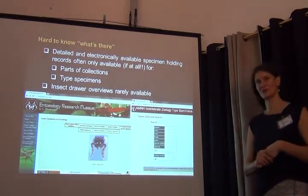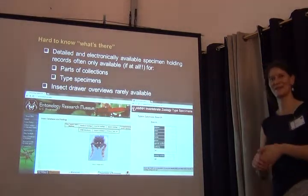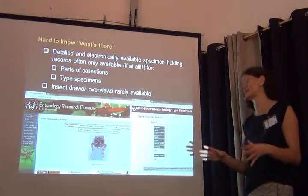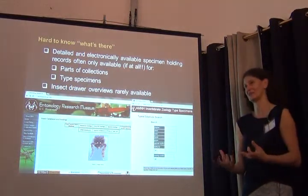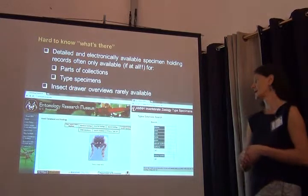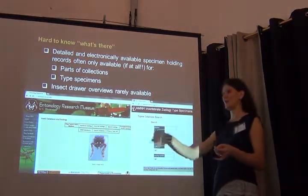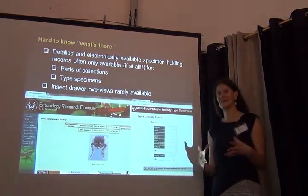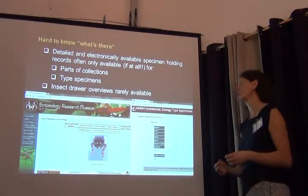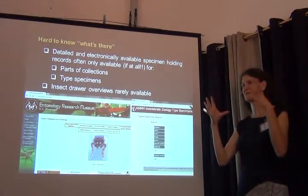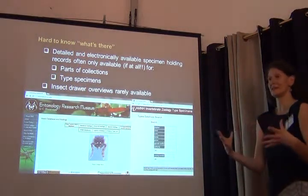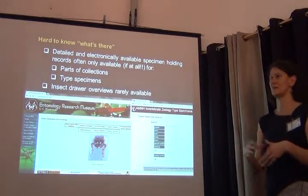Obviously this is a great resource, and you think every museum should have that because it would make everyone's lives so much easier. Another thing that would give us a good idea of what's in a museum would be to have simple overviews of drawers. But even that is in most cases not available.